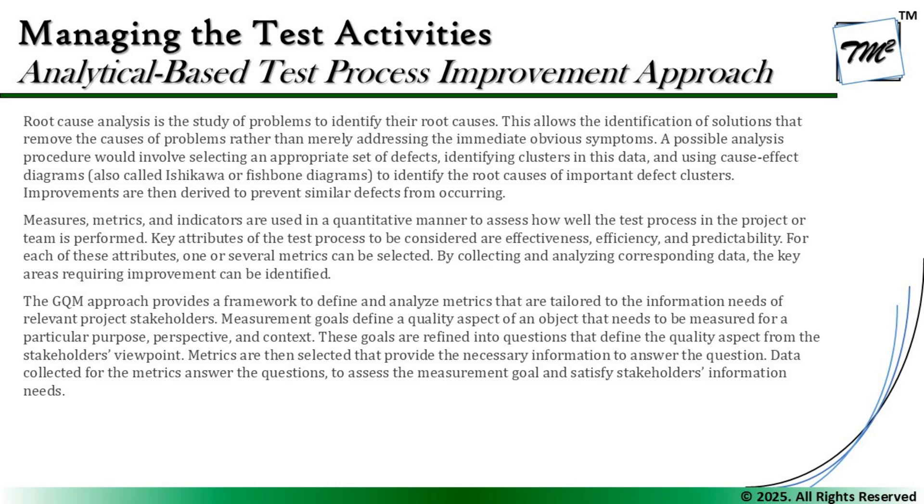A possible analysis procedure involves selecting an appropriate set of defects, identifying clusters in the data, and using a cause-effect diagram - also known as a fishbone diagram - to identify the root causes of important defect clusters. Improvements are then derived to prevent similar defects from occurring. The fishbone diagram shows multiple causes resulting in a particular effect, so we can understand how various factors contribute to a particular outcome and work on eliminating all the causes.